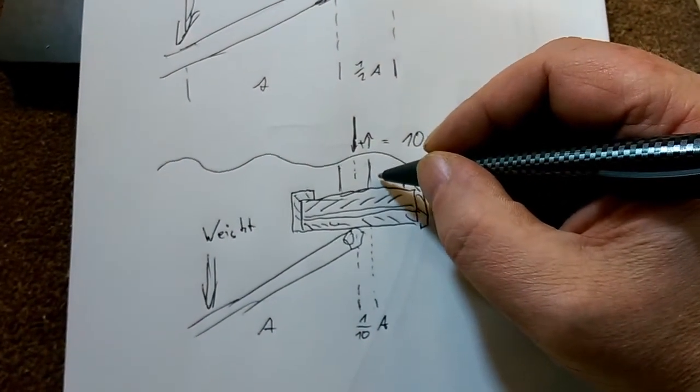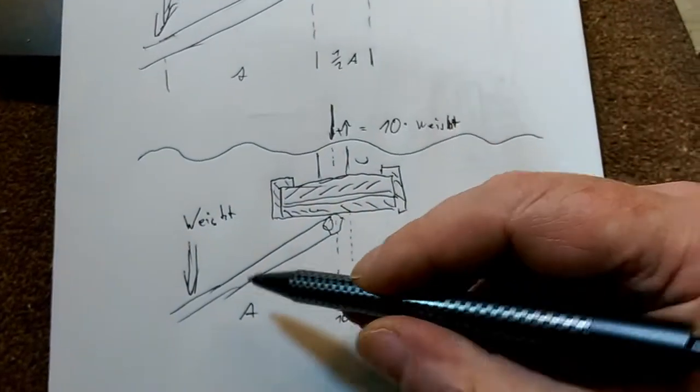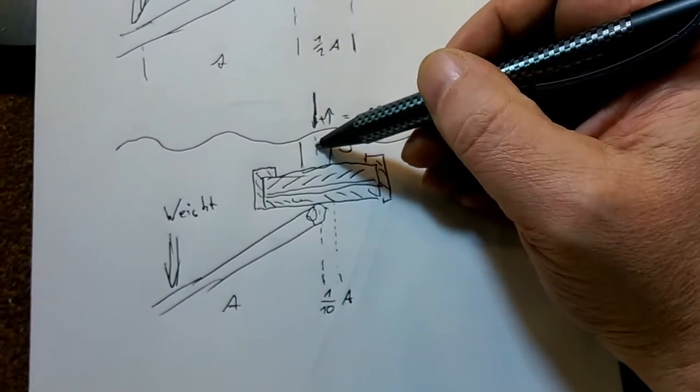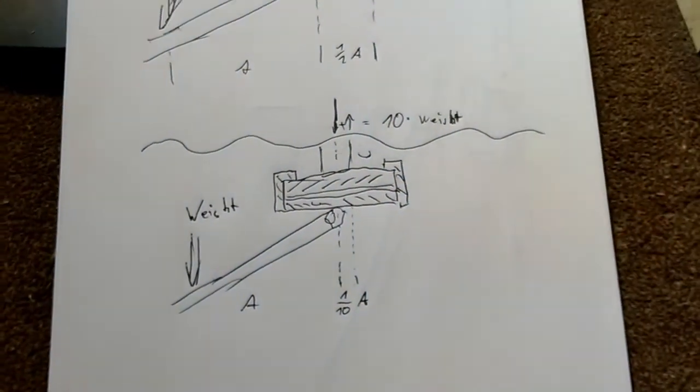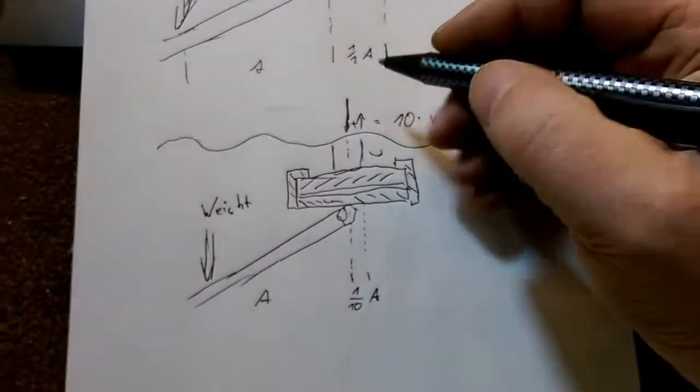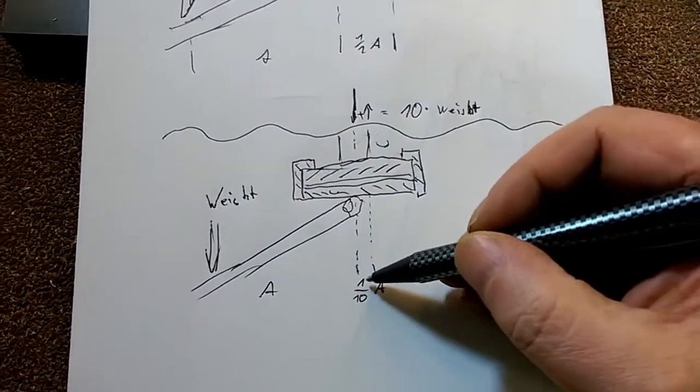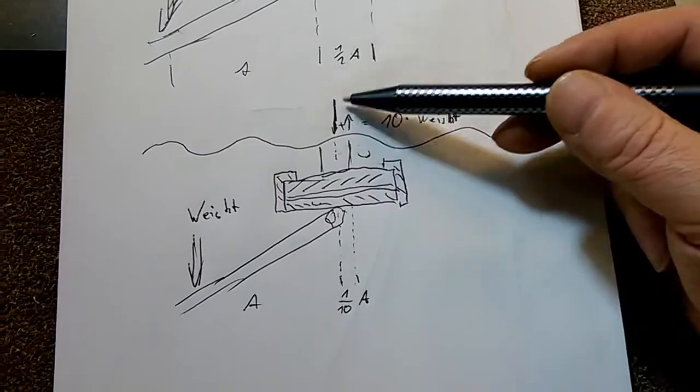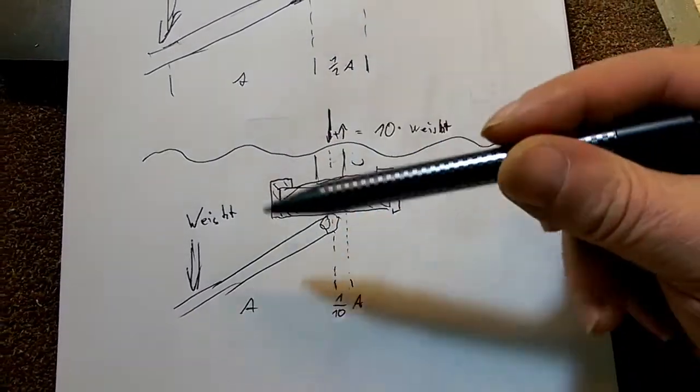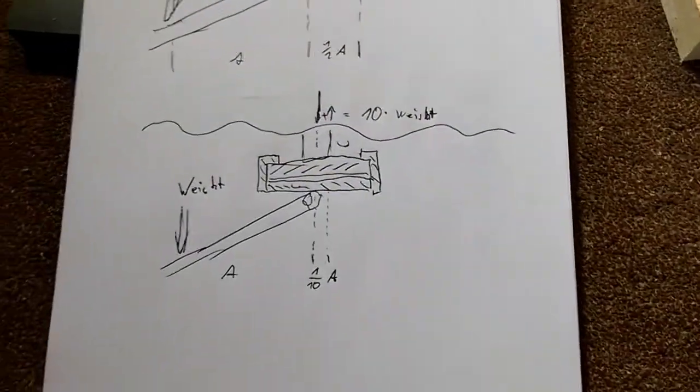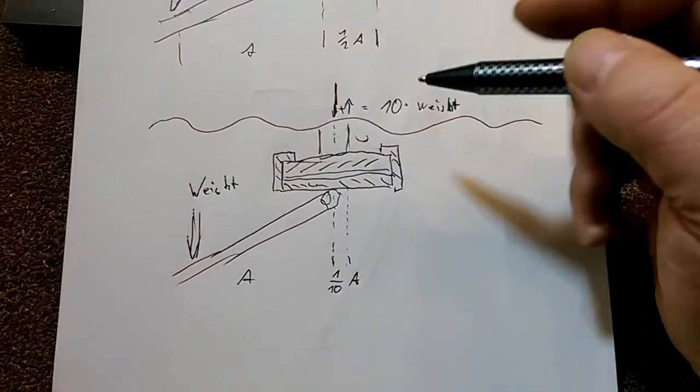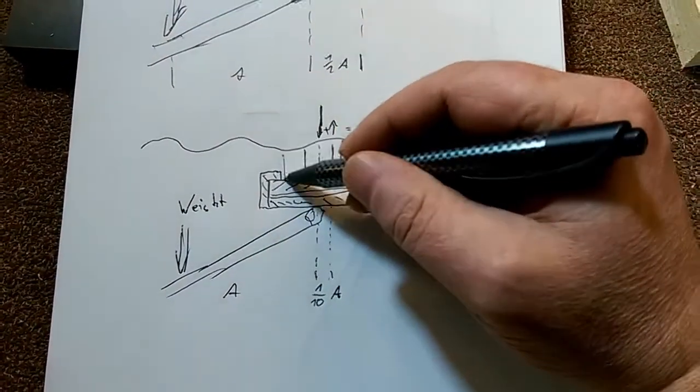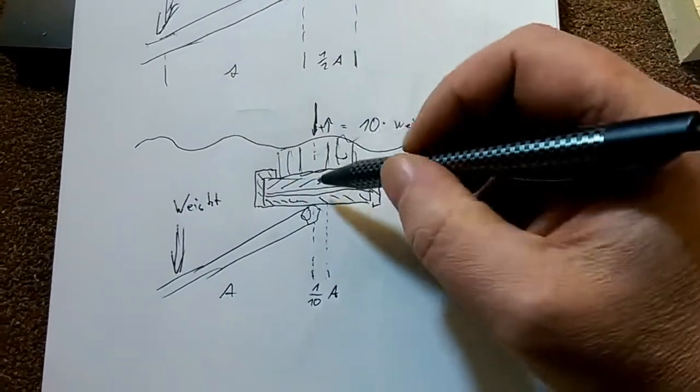It actually tries to bend this way. We got the distance a here, but this distance from the center point to the outer point of this mounting thingy is, let's assume, a tenth of this. So the force up here is ten times the weight on here, and this makes me anxious about using just one.